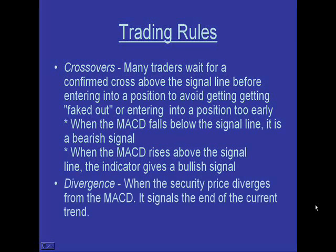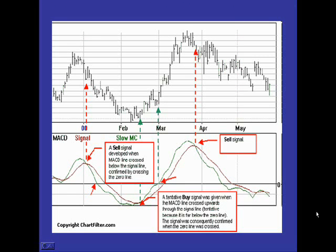Once again, we're going to talk about divergence — when the crossovers do not follow the stock. When a stock is making a higher high but the MACD indicator did not go as high, that is another signal that the current trend may be over. Here we have a sell signal because the MACD line crossed down below the signal line, and that's basically where the stock began to go down. As we cross back above, that gives us our buy signal and the stock went up. Here we go again — crossing down, and that was when this position began to sell. We're looking for the crossovers: crossing down to sell, crossing up to buy.